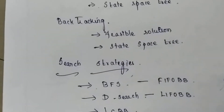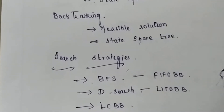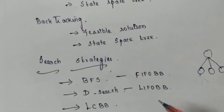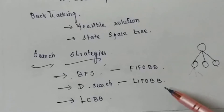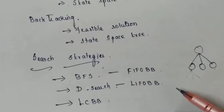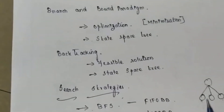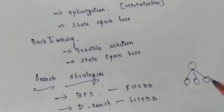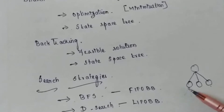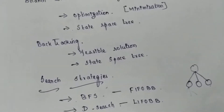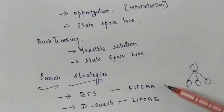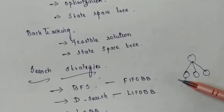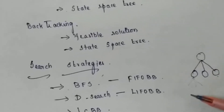Least-cost branch and bound uses a bounding function to decide whether to prune or extend the tree. It uses a cost function based on constraints to make this decision. All of these trees are breadth-first in nature — once you process one level, all children of that node are generated before the next level is explored.